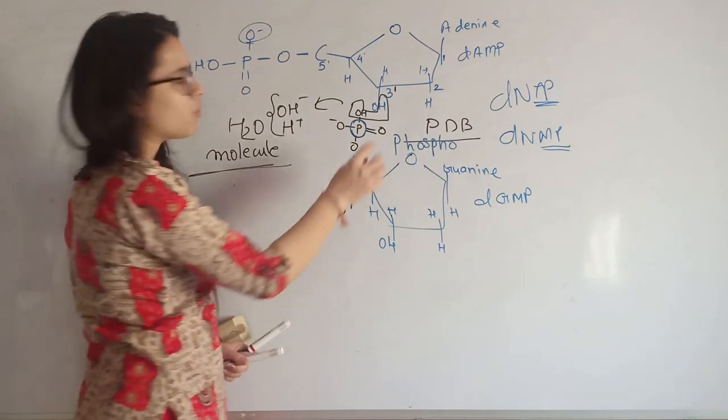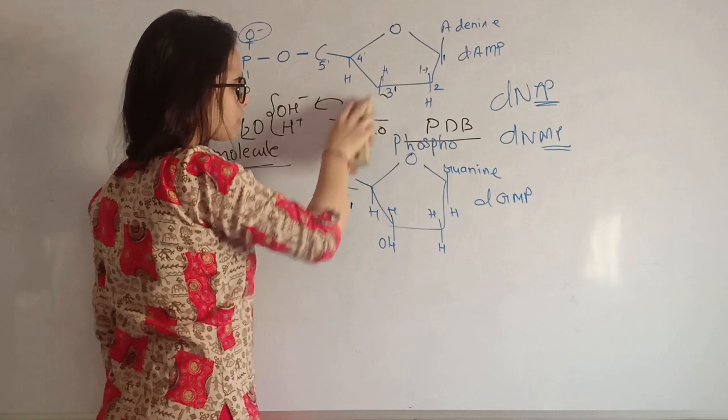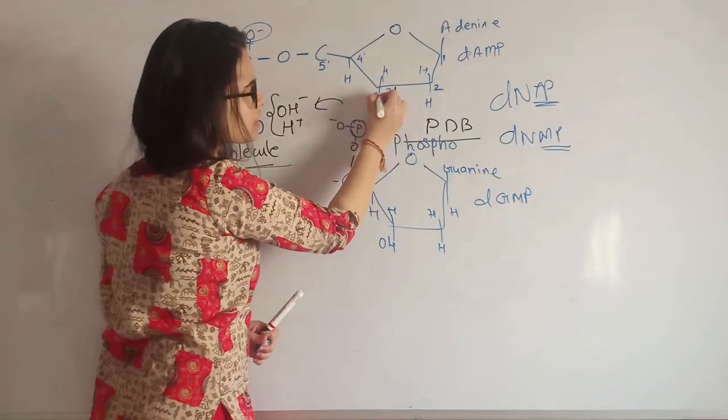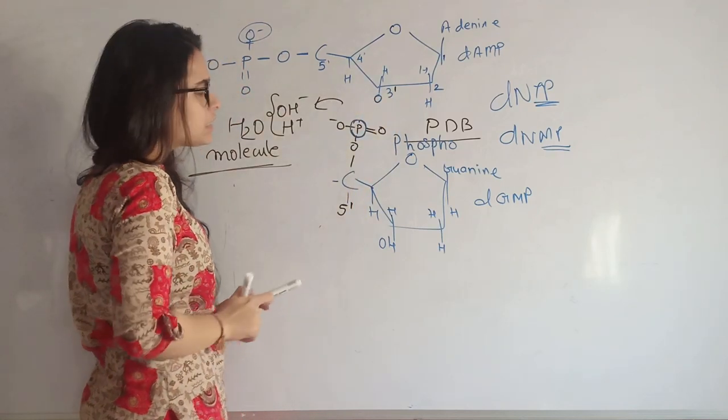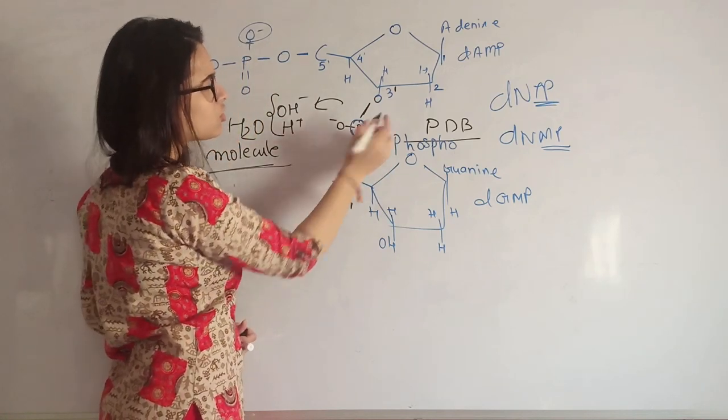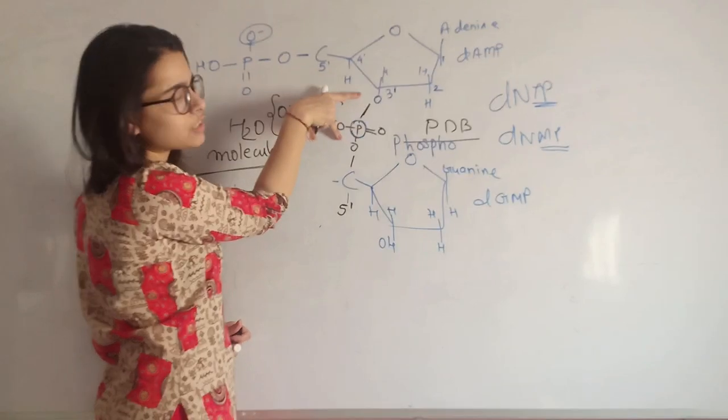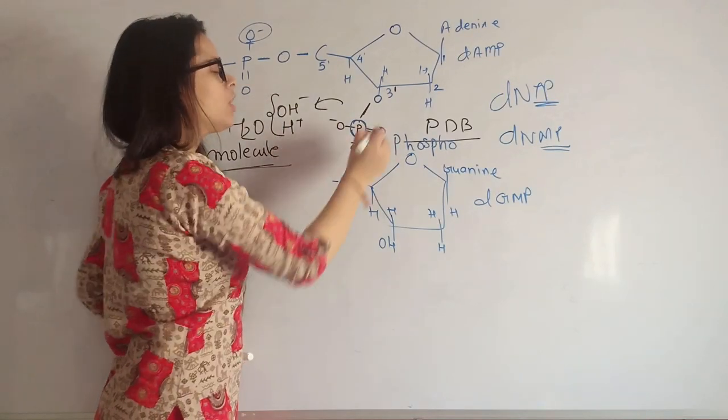Why diester? Because there are two oxygens and in between there is a phosphate group. Let me draw it. By removing this OH ion and H plus ion, I'm drawing it. This is the oxygen of three prime hydroxyl group, and this is the phosphate group of five prime carbon.